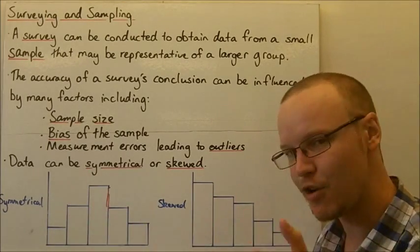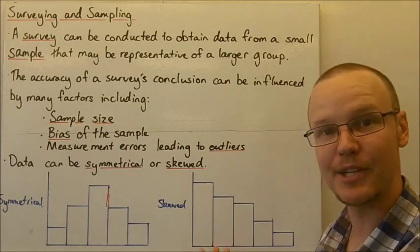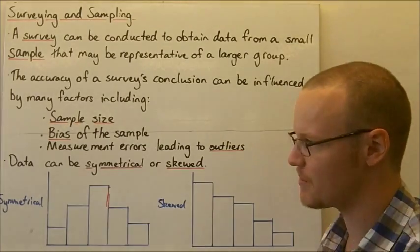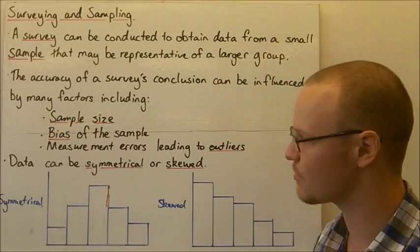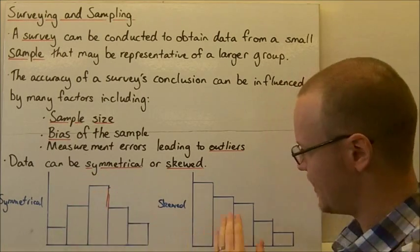So neither of these is incorrect or right or wrong. This just might be dependent on the data that we're collecting. It might just be dependent on the kinds of information that we're looking for. So this one's symmetrical. You can see it's nice and even. And this one's skewed.